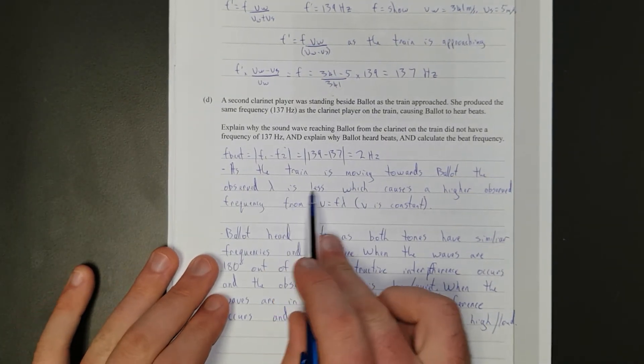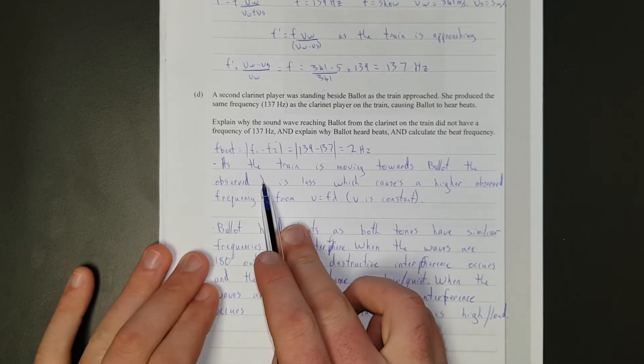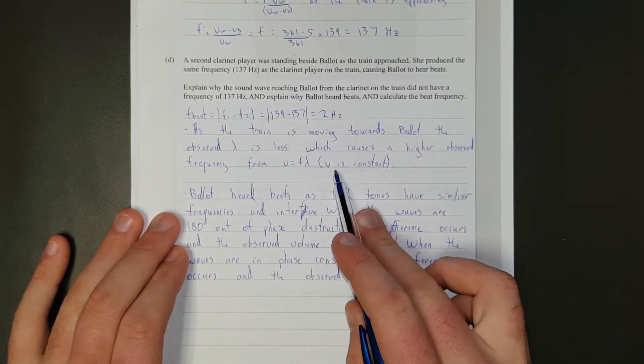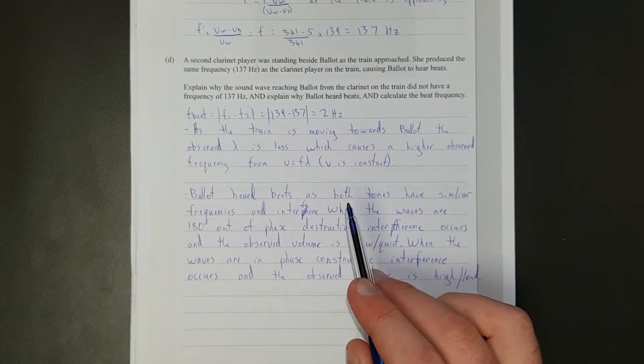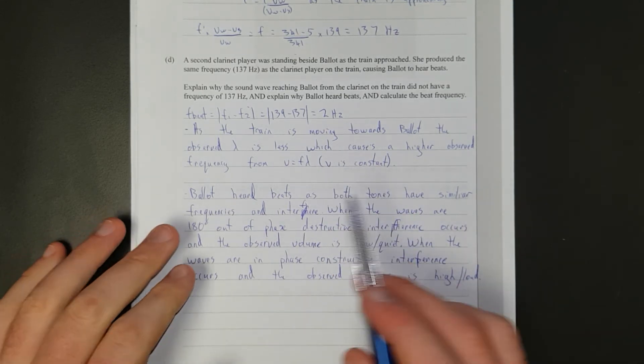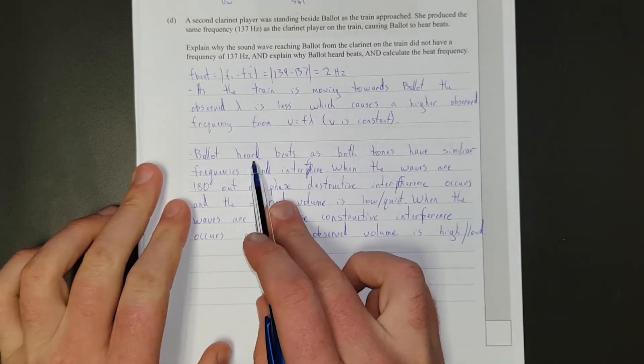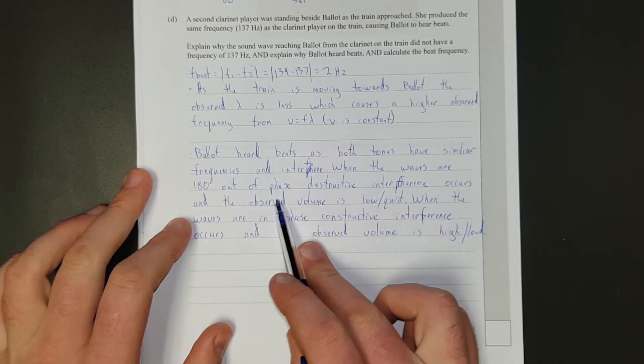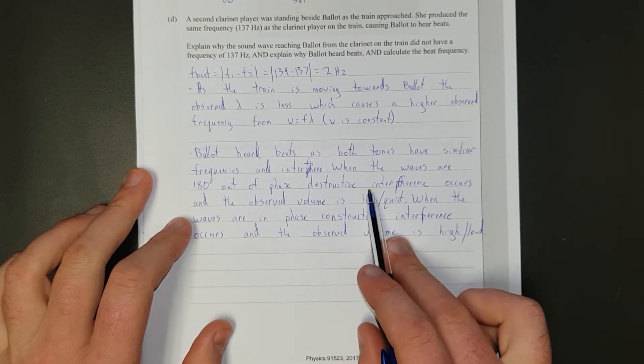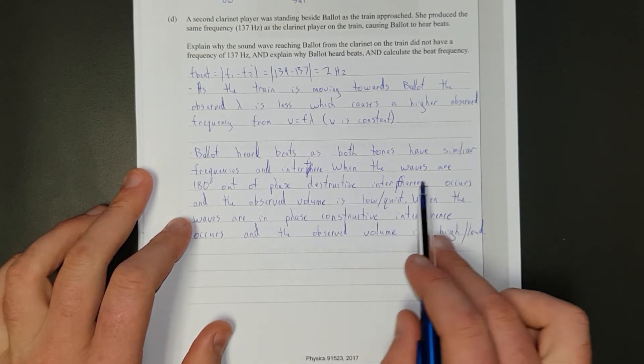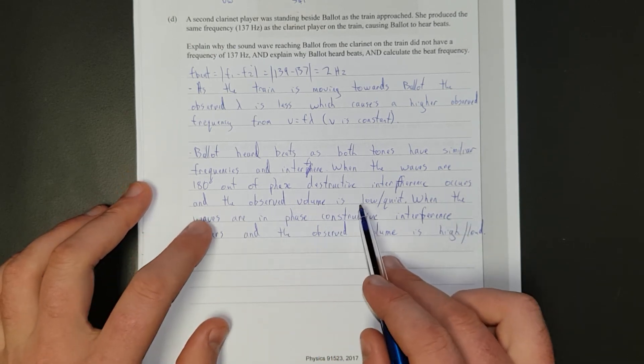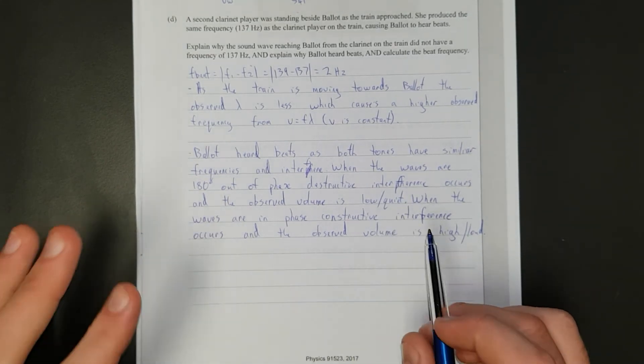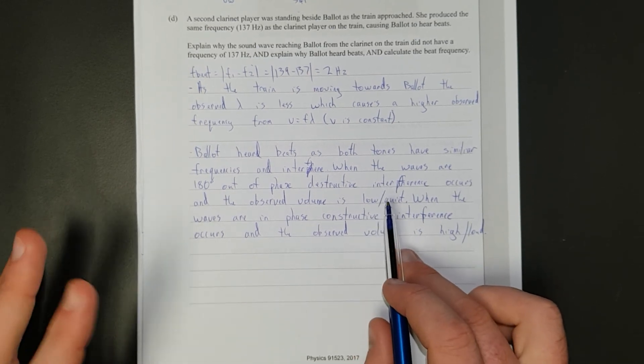Sweet. Right, so what I've said is, as the train is moving towards Ballot, the observed wavelength, lambda, is less, which causes a higher observed frequency from V equals F lambda, just the wave equation. The velocity is constant, because it's just the speed of sound in air, which doesn't change unless the temperature or pressure changes. Ballot heard beats, as both tones have similar frequencies and interfere. When the waves are 180 degrees out of phase, destructive interference occurs, and the observed volume is low or quiet. You never hear it silenced, because you're in a three-dimensional world, and there's other noise, and it's never really perfect. So, it's just lower volume.